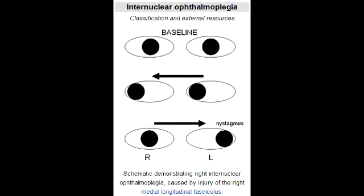What are the clinical presentations seen with internuclear ophthalmoplegia? The clinical presentation of internuclear ophthalmoplegia is conjugate lateral gaze palsy and horizontal diplopia. Conjugate lateral gaze is when the affected eye shows impairment of adduction.